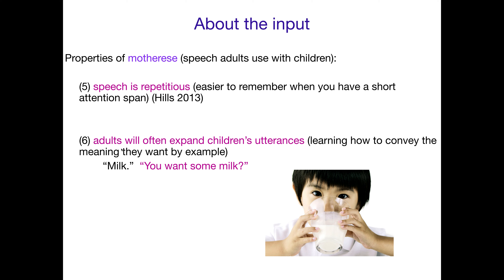It turns out that adults will often expand children's utterances as well. So the child says 'milk' and the adult will say, 'Oh, you want some milk?' Basically what they're doing is modeling how to convey that meaning by example, providing children a nice targeted example of how to say what they want to say.